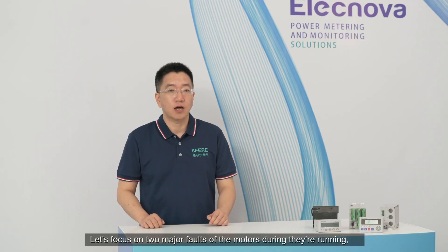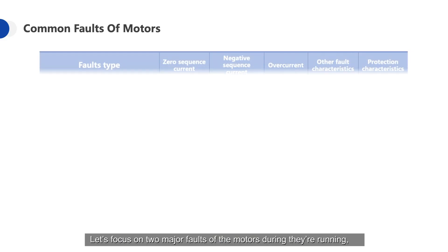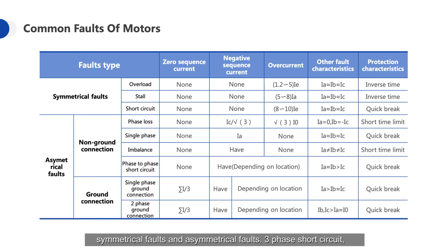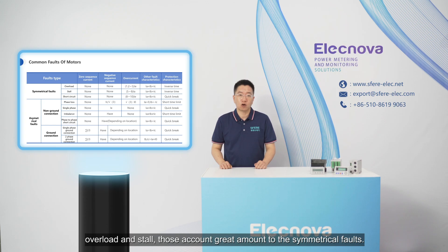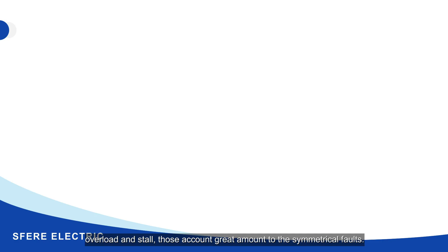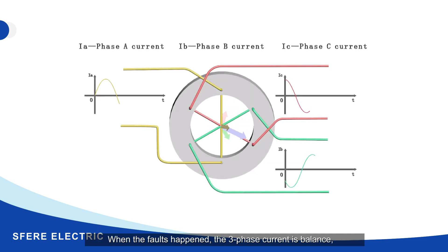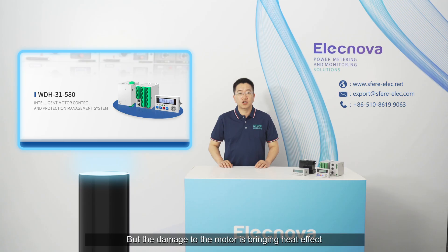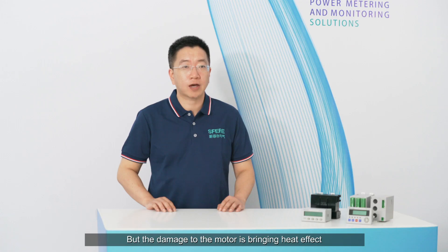Let's focus on two major faults of motors during their running: symmetrical faults and asymmetrical faults. Three-phase short circuit, overload, and stall are among the symmetrical faults. When these faults happen, the three-phase current is balanced, with no negative sequence current and no zero sequence current. The damage to the motor comes from the heat effect caused by the enlargement of the current.